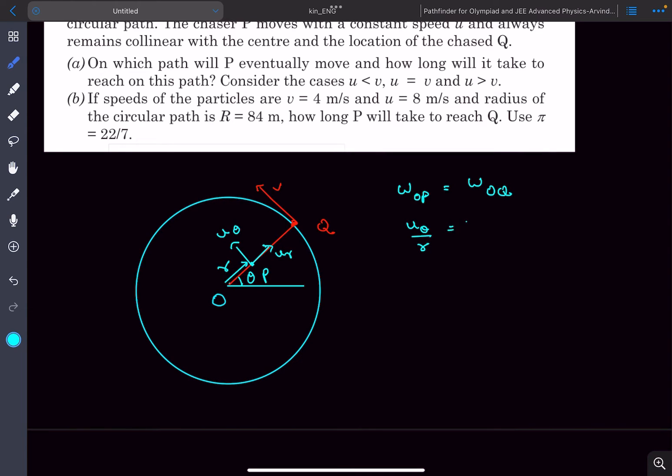And this has to be equal to the omega of OQ which is constant and it is equal to v divided by capital R. Now it's also given that the speed of particle P is constant, so we can say u_theta squared plus u_r squared equals u squared.